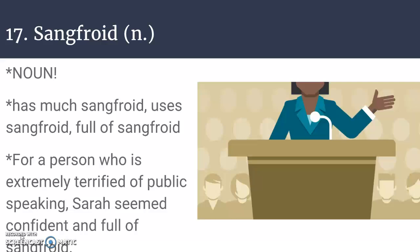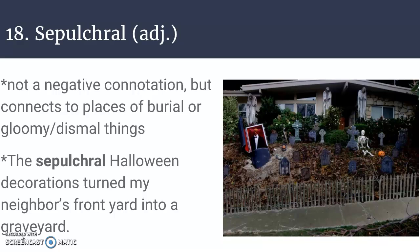Number seventeen is sangfroid, which is a noun. Sangfroid is composure or coolness, especially in trying circumstances — you're keeping your cool even when in a tough situation. Since it's a noun, don't use it to describe somebody; instead say a person has much sangfroid, uses sangfroid, or is full of sangfroid. For a person who is extremely terrified of public speaking, Sarah seemed confident and full of sangfroid.